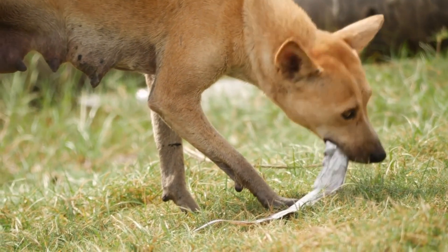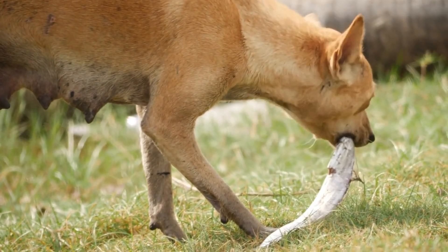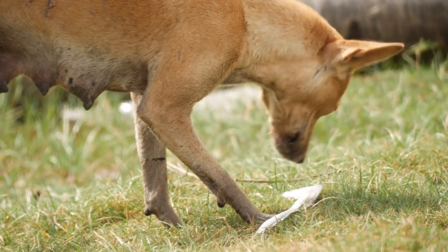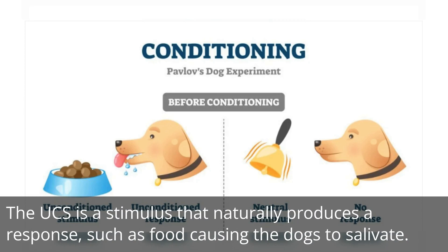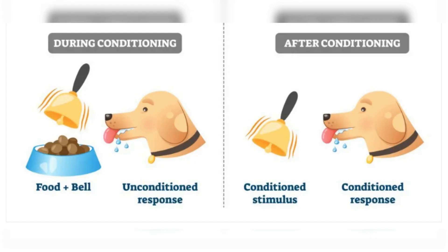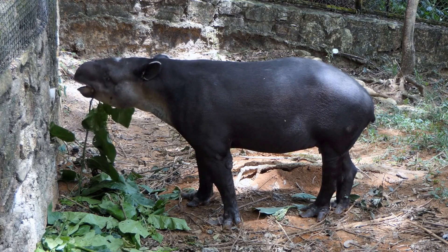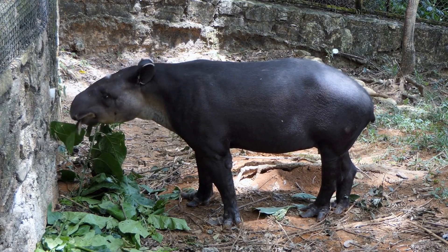The basic process of classical conditioning involves three components: the unconditioned stimulus (UCS), the unconditioned response (UCR), and the conditioned stimulus (CS). The UCS is a stimulus that naturally produces a response, such as food causing the dogs to salivate. The UCR is the response that naturally occurs to the UCS, such as the dogs salivating in response to the food. The CS is a previously neutral stimulus that is paired with the UCS, such as the sound of a bell. Eventually, the CS becomes associated with the UCS and produces the same response as the UCS, which is called the conditioned response (CR).